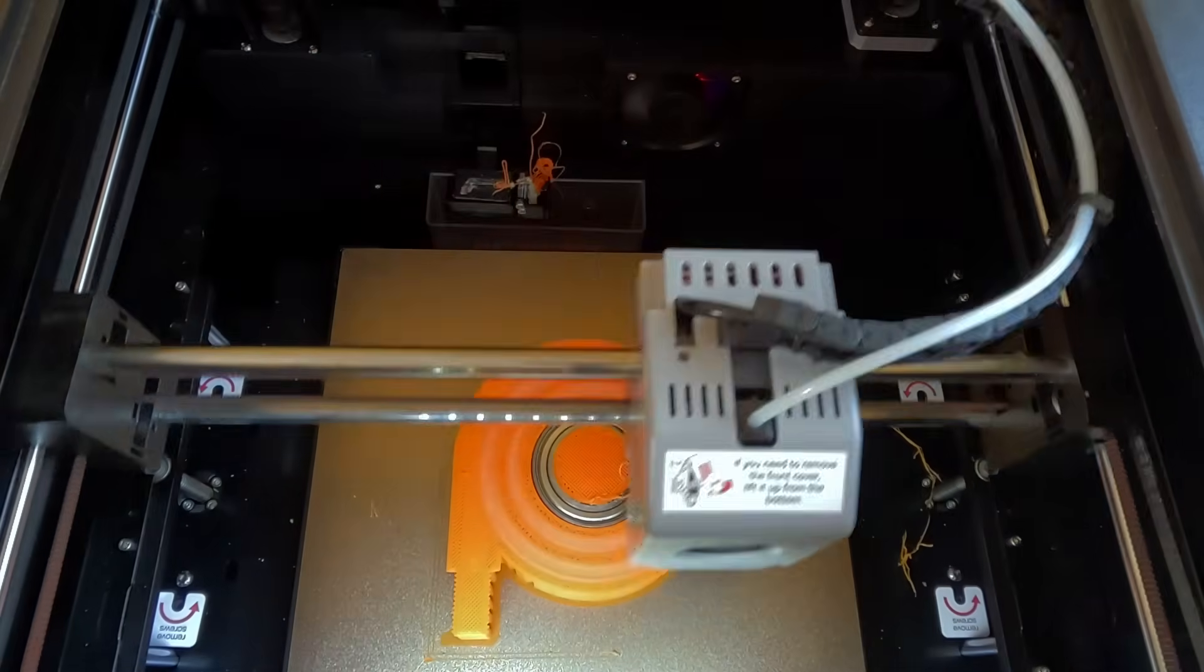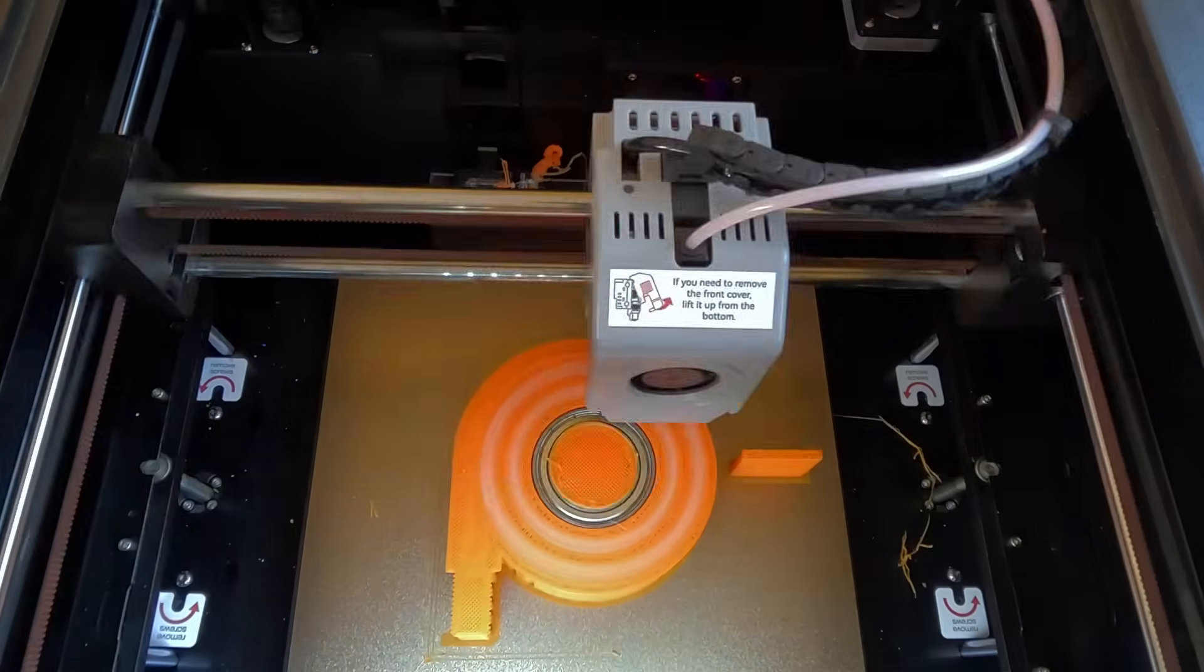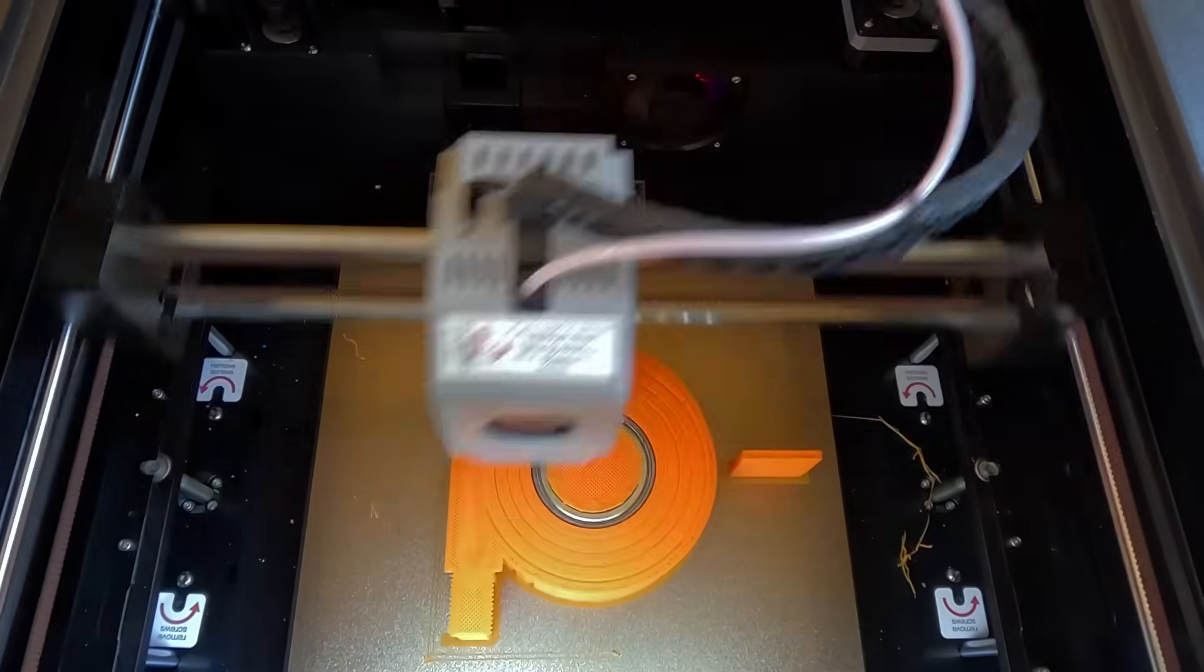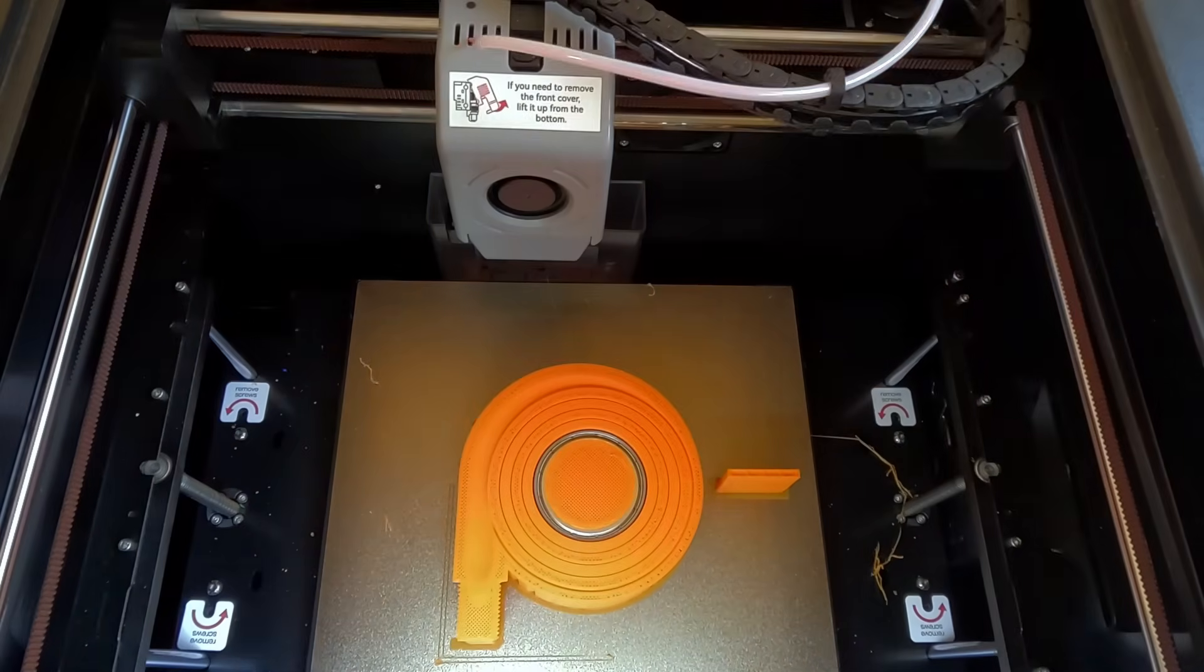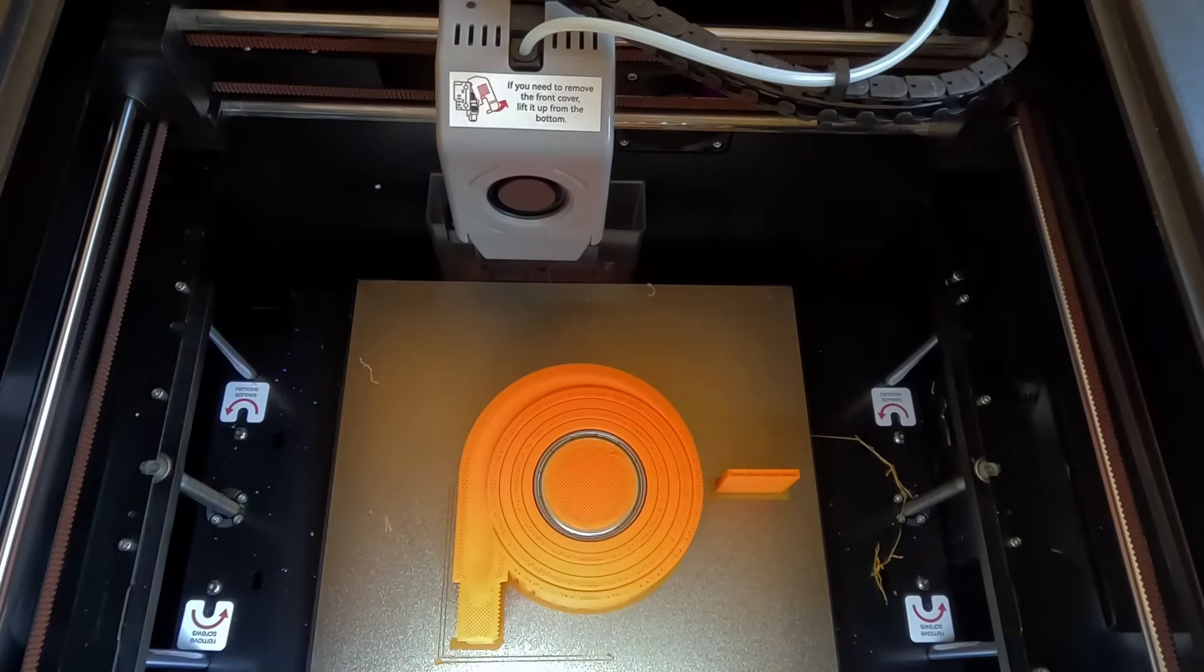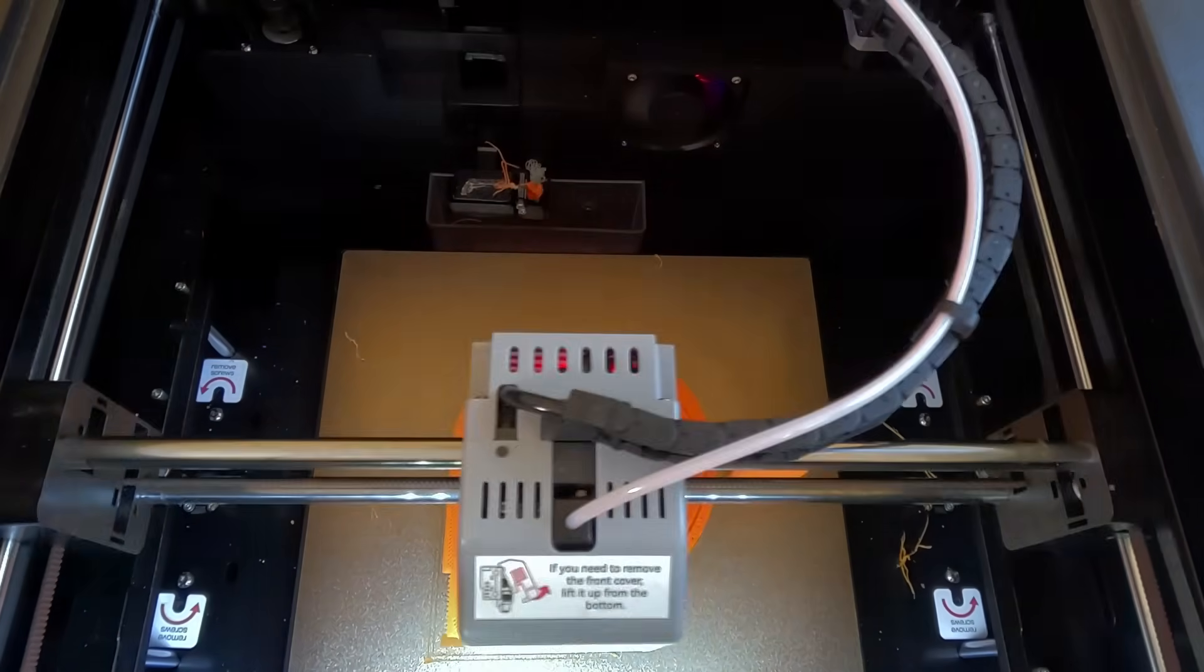Change one to support material. Change two back to PLA. Change three back to support material. And change four back to PLA for the rest of the print.